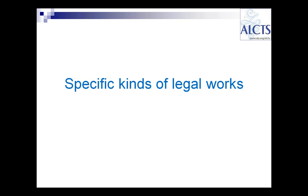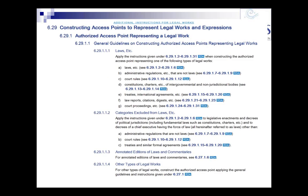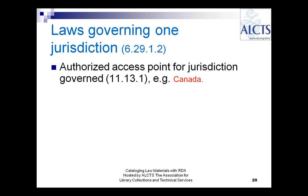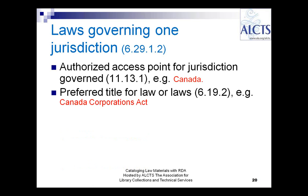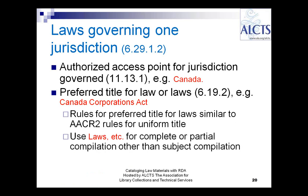Now we'll talk about specific kinds of legal works. The first of these is laws governing one jurisdiction. To create such an authorized access point, you start with the jurisdiction governed by the law — for example, Canada — and add the preferred title for the law or laws, putting those together to form your authorized access point. These rules are very similar to the AACR2 rules for uniform title. The preferred title 'laws, etc.' is still used for complete or partial compilations other than subject compilations, just as in AACR2.